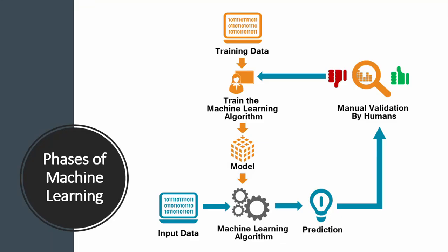In machine learning there are several phases. Simply put, your machine takes some training data, cleans it, and builds a model. Whenever you pass new input, the model can predict and send back the output.